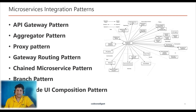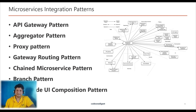Fourth, we have the Gateway Routing Pattern — the API Gateway is responsible for request routing and implements API operations by routing requests to the corresponding service. Fifth is the Chained Microservice Pattern, which helps provide a consolidated outcome to your request, where requests are processed by multiple microservices chained together.